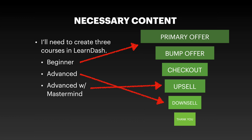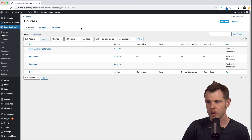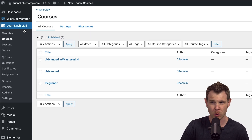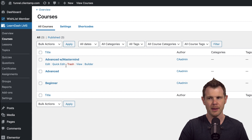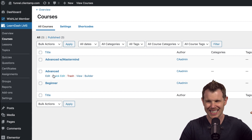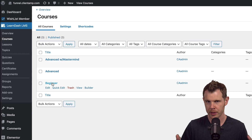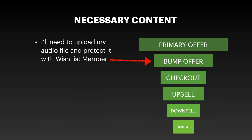We're going to be using LearnDash to create our courses, and I need to create three different courses: a beginner level course as our primary offer, an advanced course as our downsell, and the advanced course with the mastermind as the upsell. I'll keep that as a separate course because we'll post recordings of the mastermind right to that course. I've got a demo WordPress site already created using LearnDash, and you can see I've created those three courses - advanced with mastermind as the upsell, advanced course as the downsell, and the beginner course as the primary product.